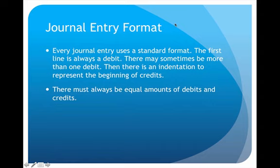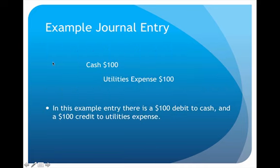It's a standard format for all journal entries. The first line always represents a debit, and we could potentially have multiple debits. Then there's an indentation, and whenever there is an indentation, that represents the start of the credits. Another rule is that I always have to have an equal amount of debits and credits — that always has to balance.